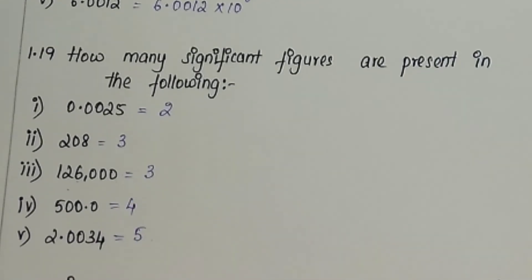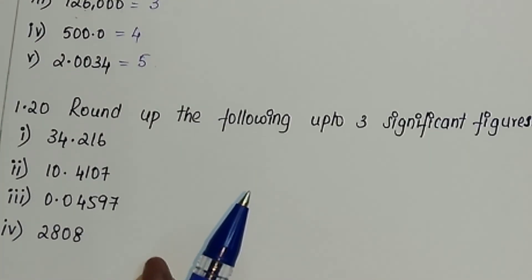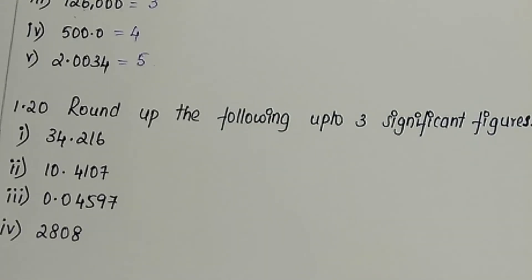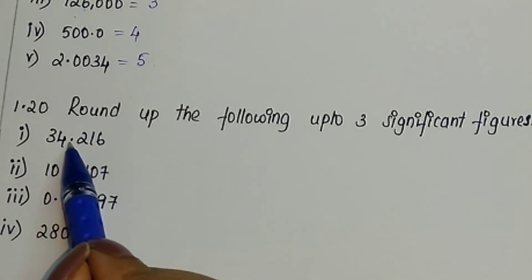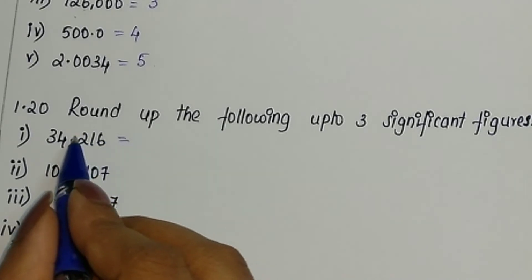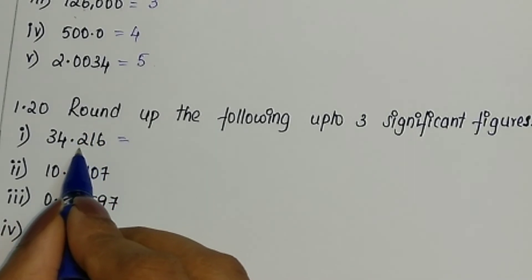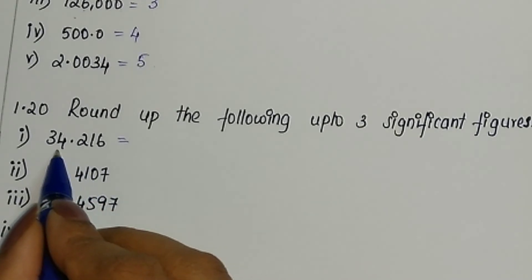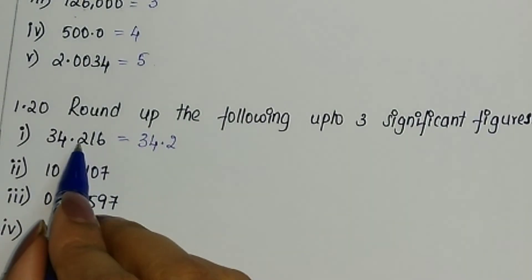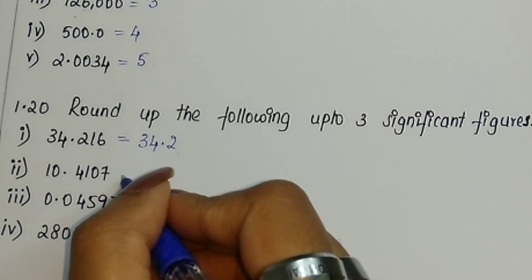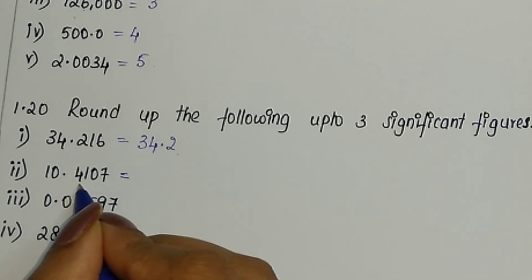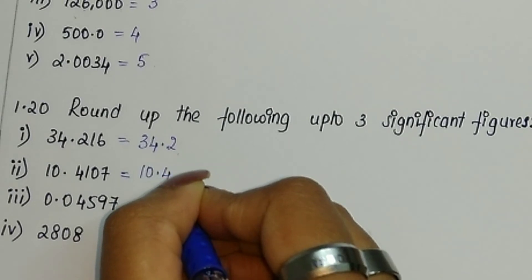Question 1.20 asks us to round off the given values to three significant figures. The first number is 34.216. The digit after the third significant figure is below 5, so the number remains 34.2. The next number is 10.4107 — the digit after the third significant figure is also below 5, so it rounds to 10.4.